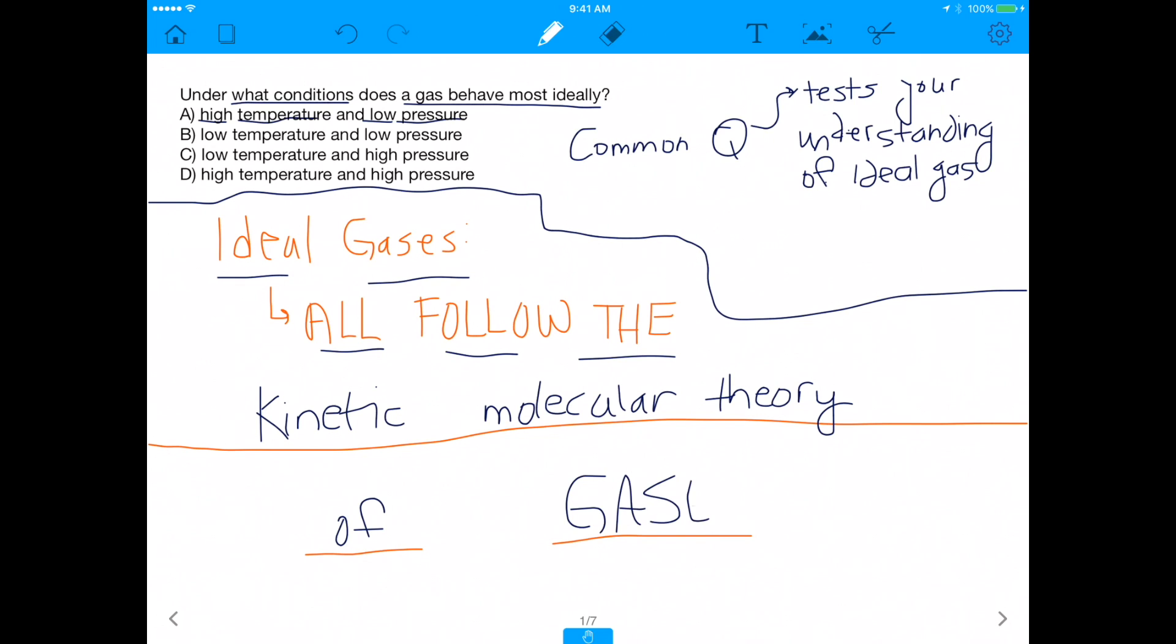So yes, all ideal gases also do follow PV equals NRT, right? But the PV equals NRT that we're so used to seeing on tests is all derived from the kinetic molecular theory. If the assumptions of the kinetic molecular theory of gases are true, then PV equals NRT will work. So with that being said, let's move on.